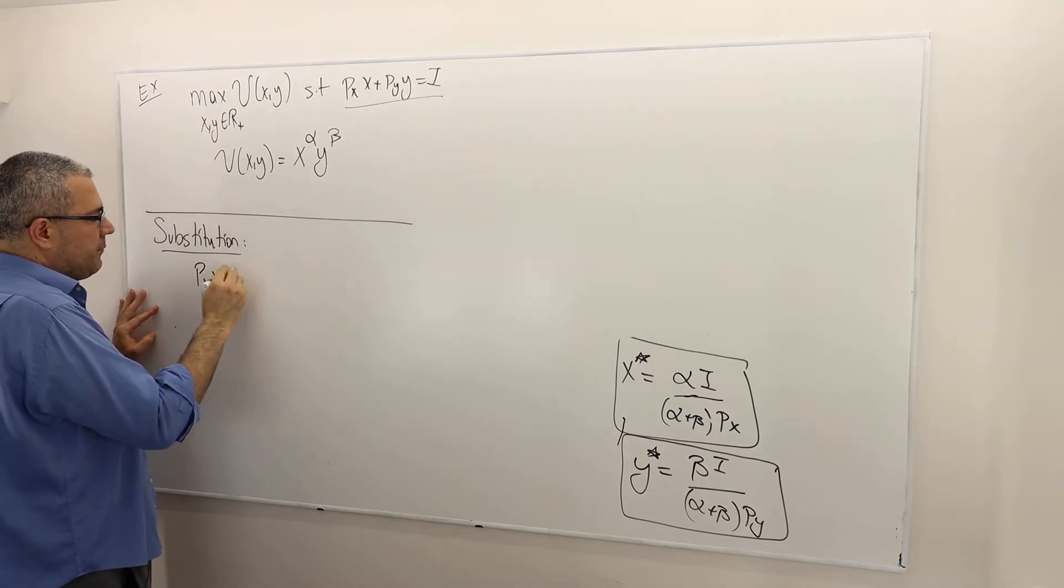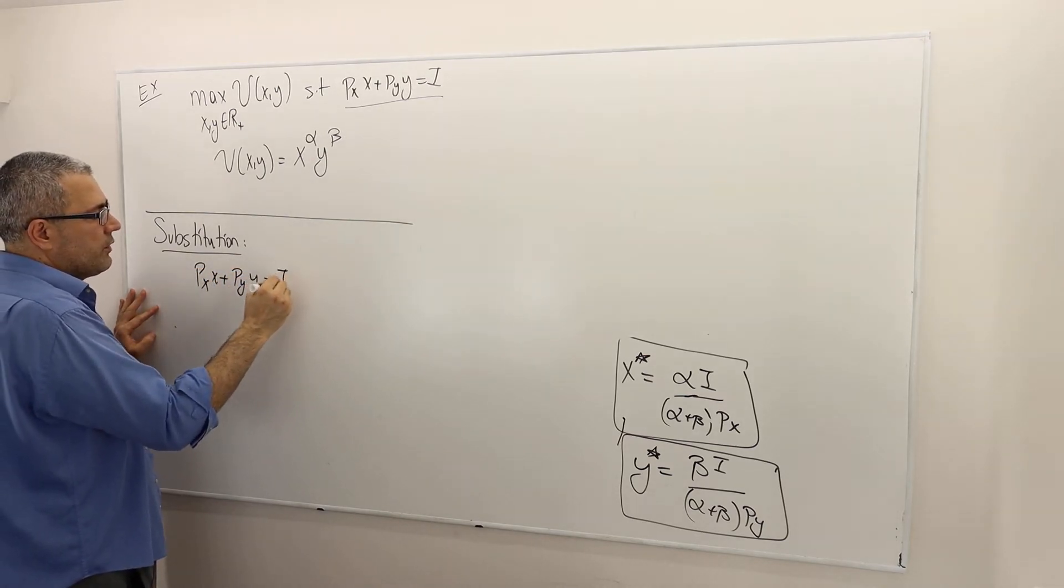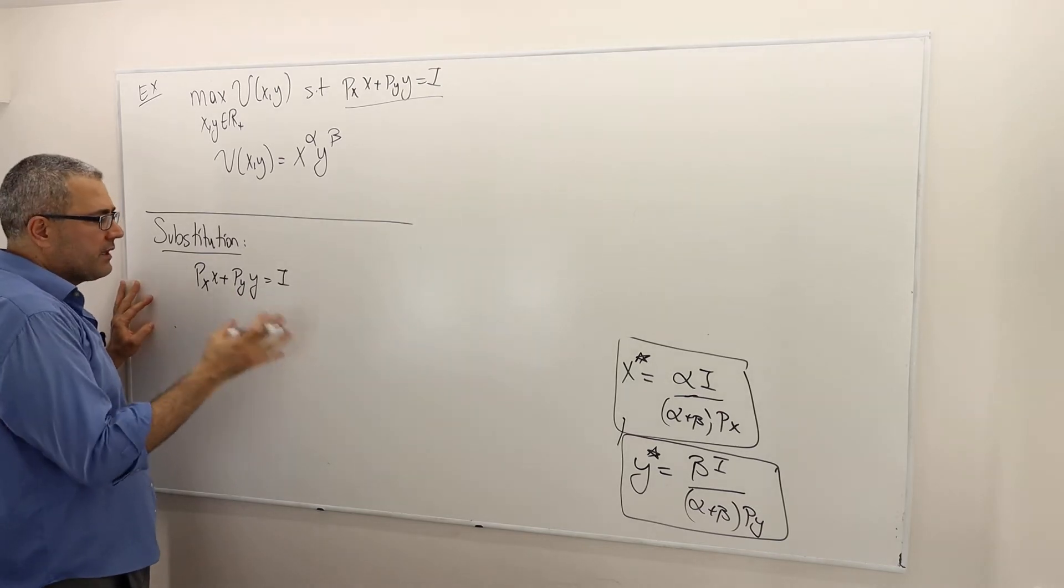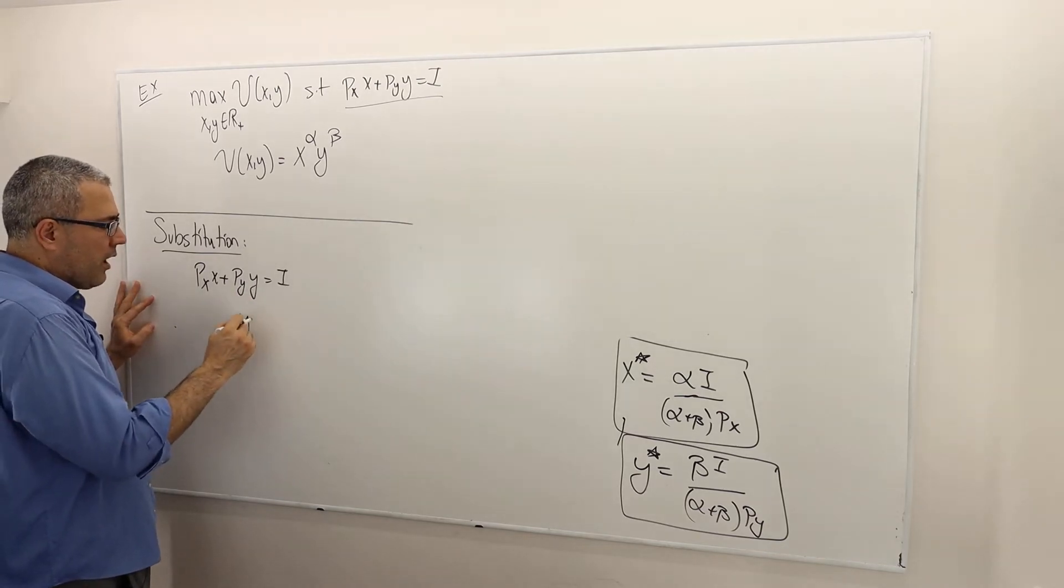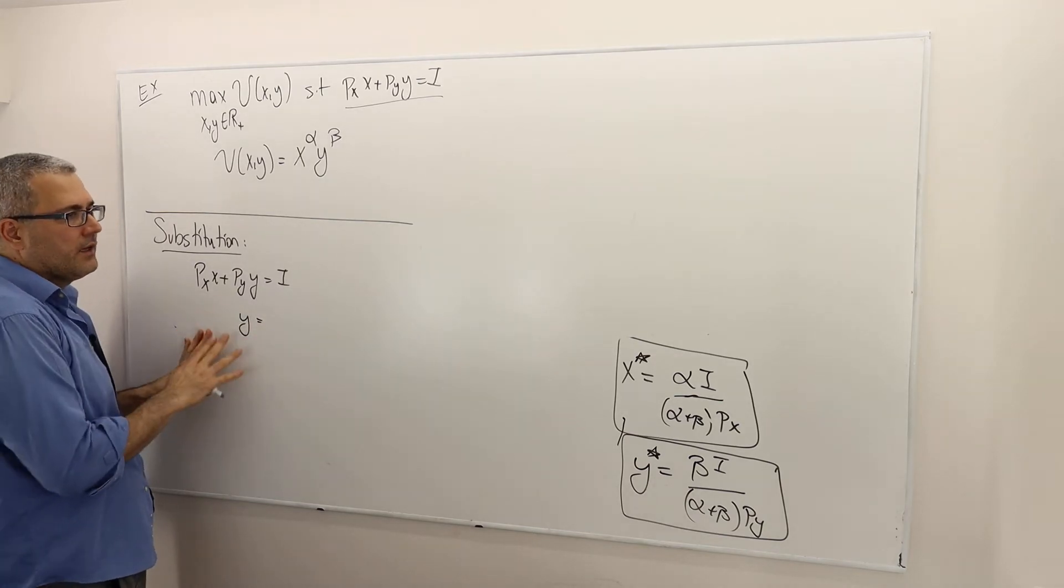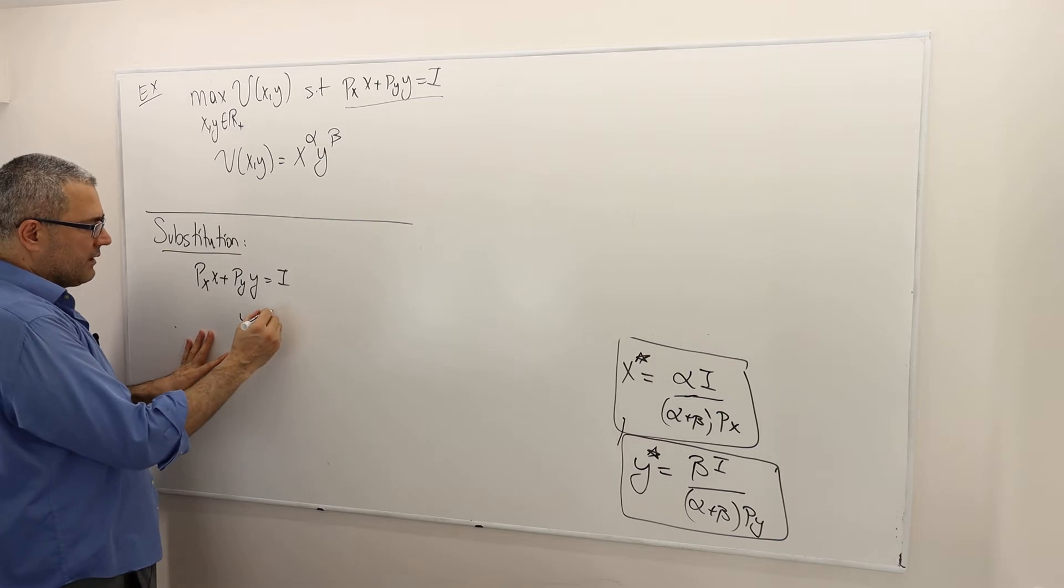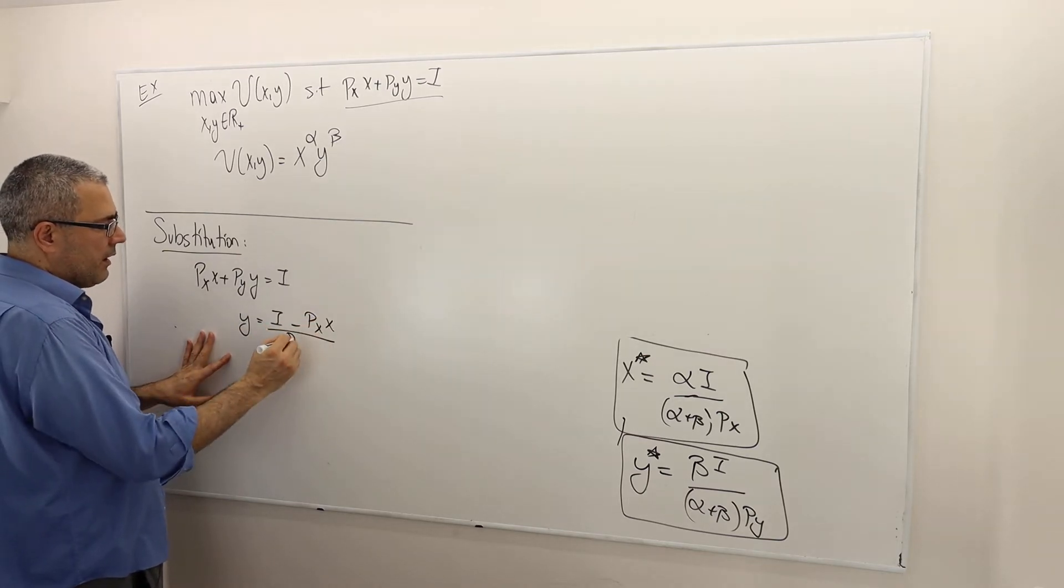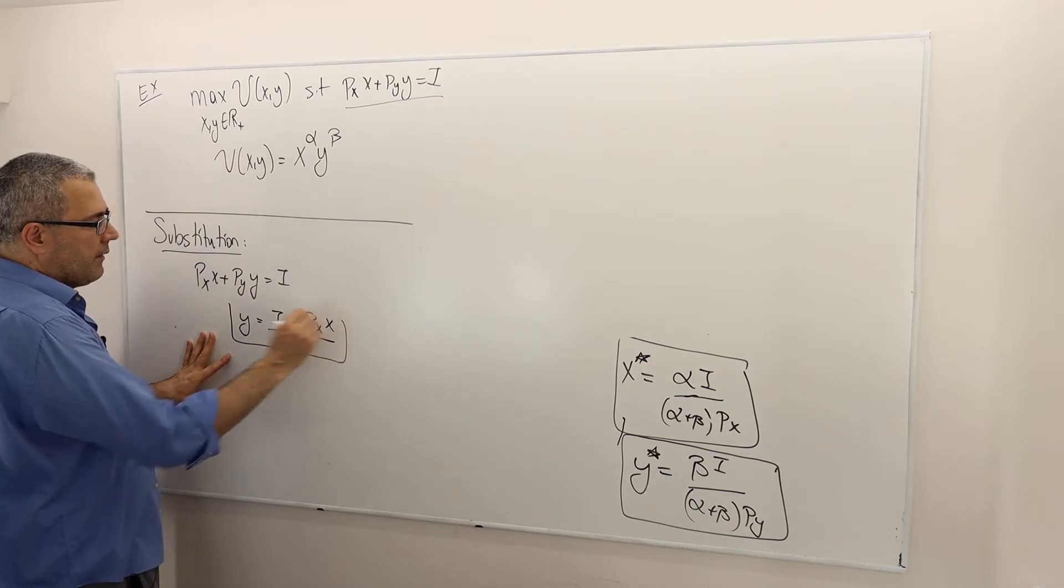So PXX plus PYY is equal to income. Well, what do we do? We write one parameter as a function of other. So I'm going to write Y as a function of X. That means leave Y alone on the left-hand side and send everything else to the right-hand side. That means income minus PXX divided by PY has to be equal to Y.